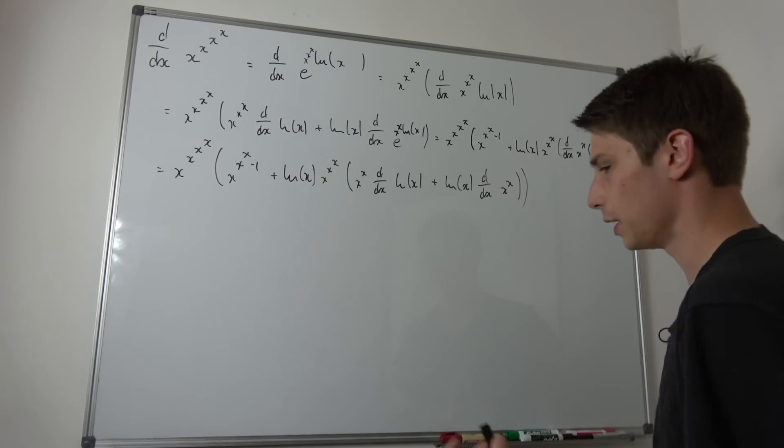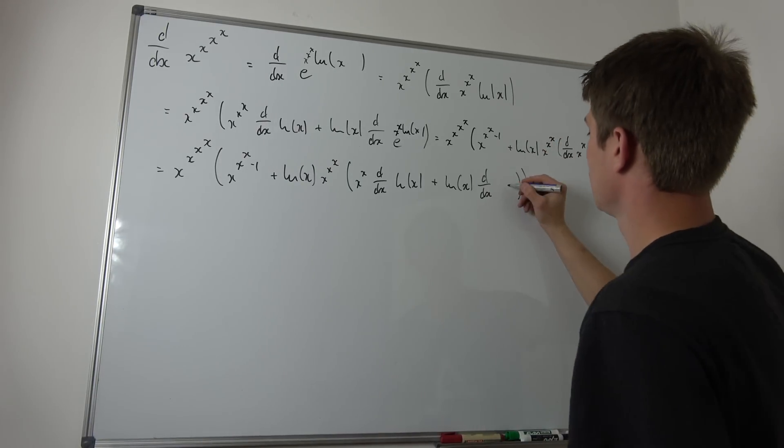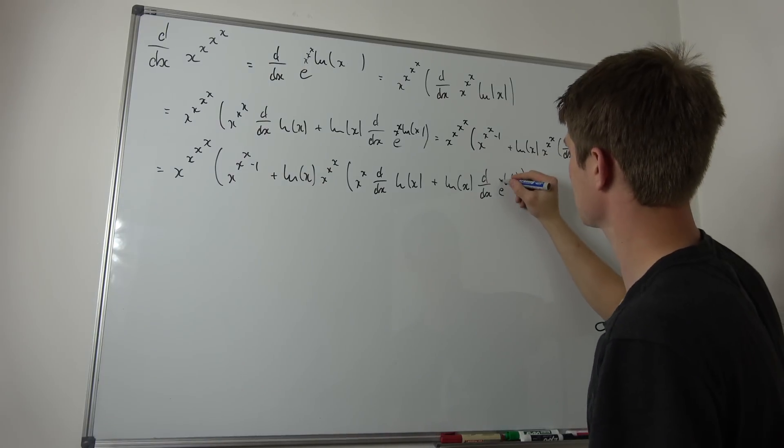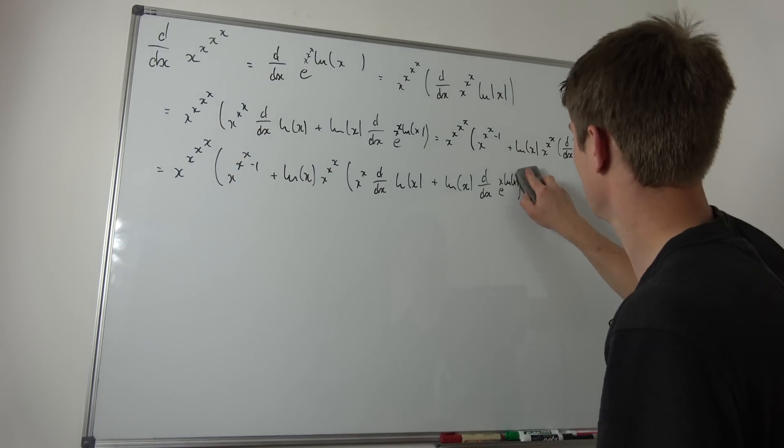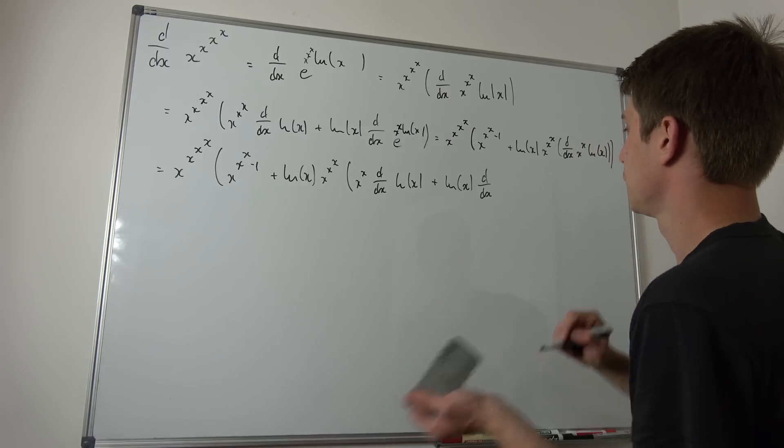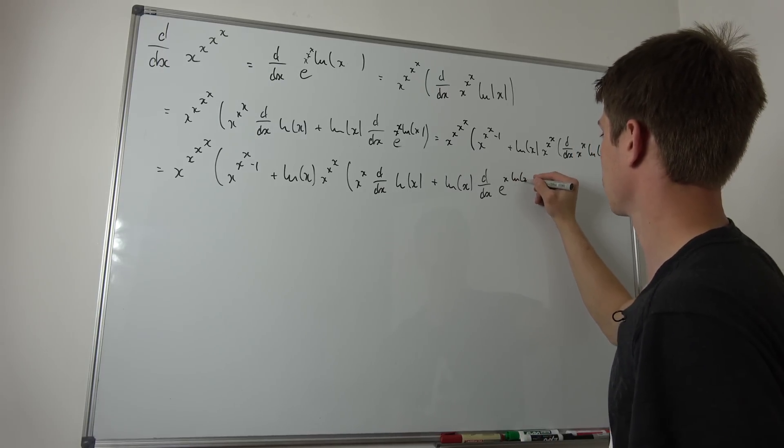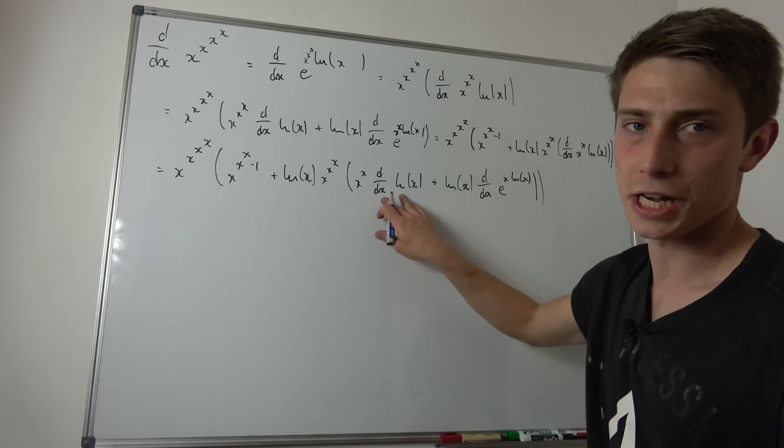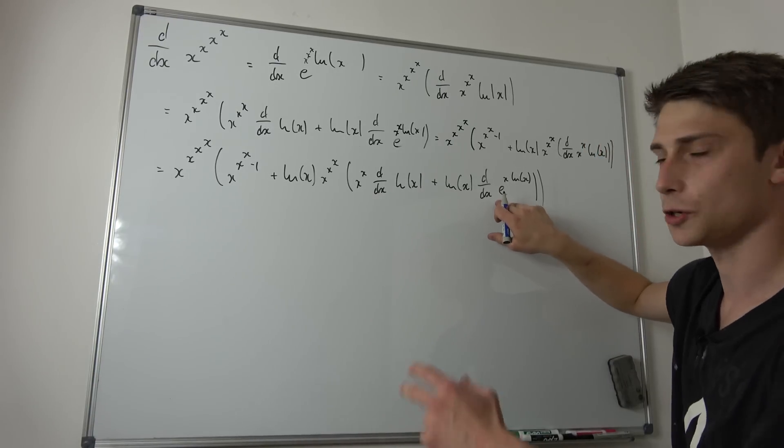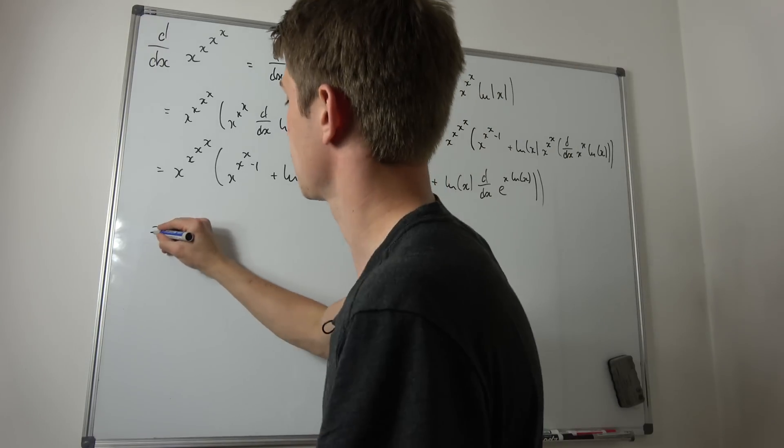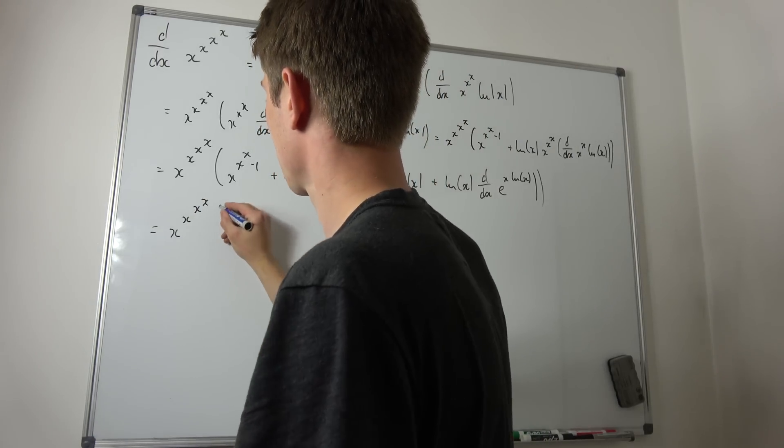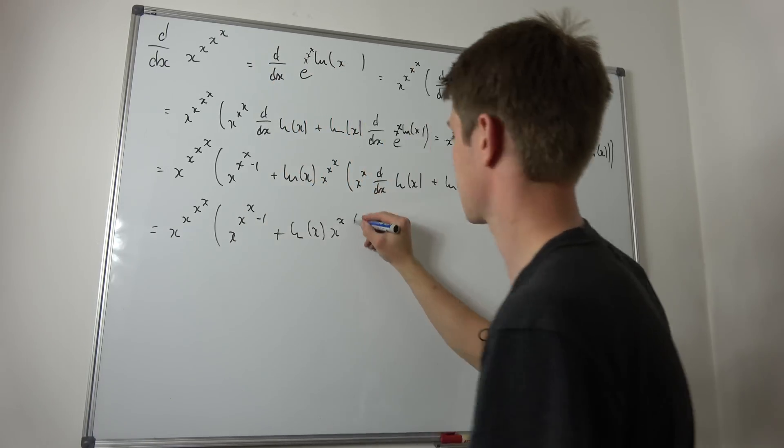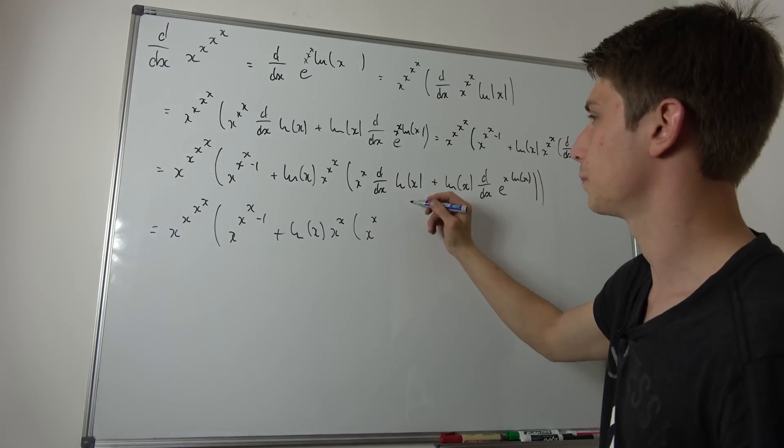That's a lot of x's. Okay, nice and fine. And now we are repeating this product rule stuff once again. So what do we have? We have x^(x^x) and then times x^x but minus 1, plus the natural log of x times x^x, and then times - so product rule. So we have x^x times d/dx natural log of x, plus, and now we have natural log of x times d/dx x^x. But what is x^x? Well, x^x is nothing but e^(ln(x^x)), but we can bring this exponent to the outside.